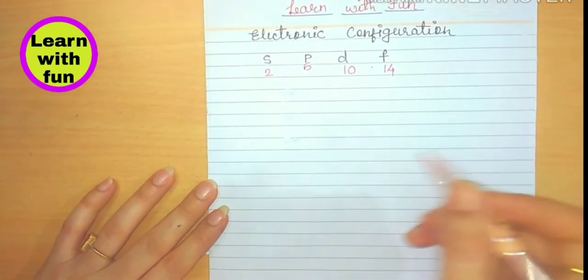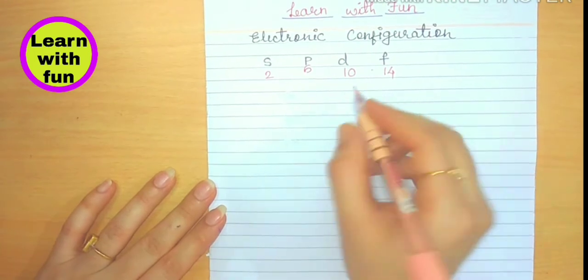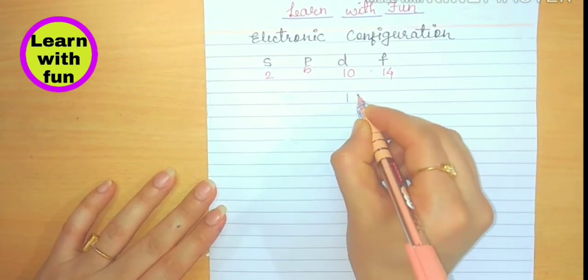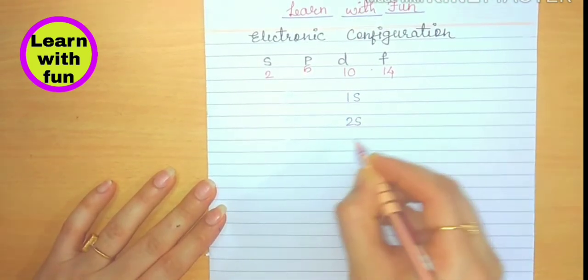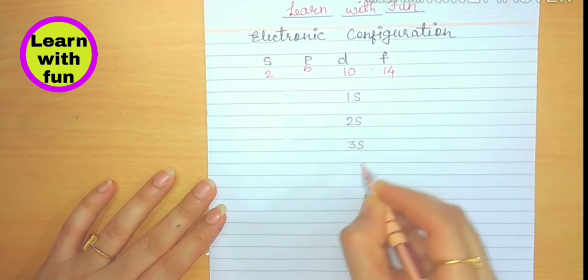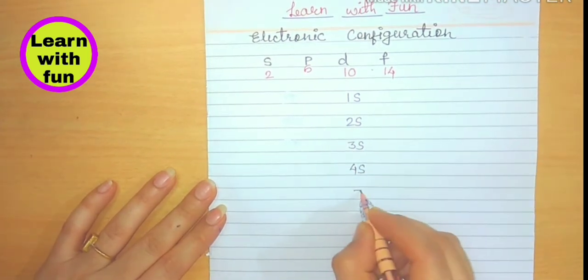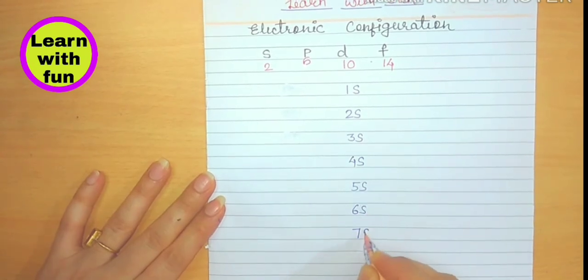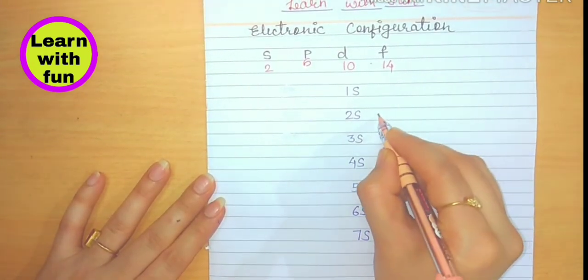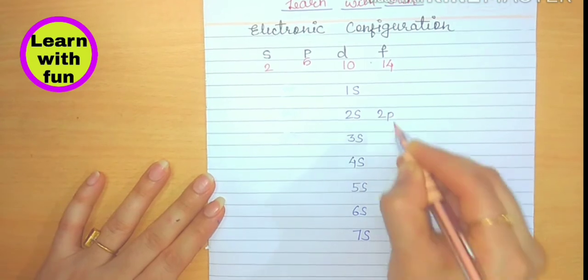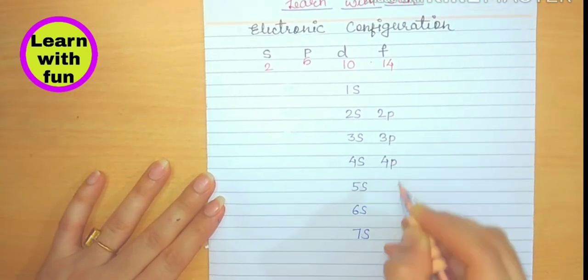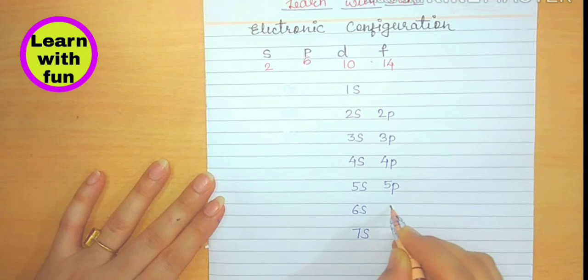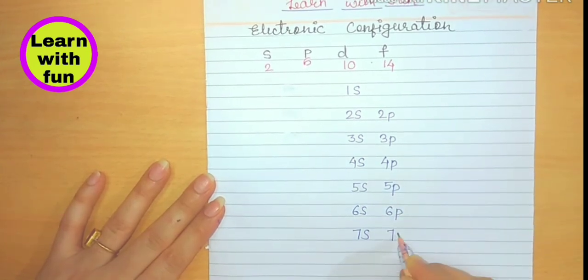So this is the way. Let's write the method: 1S, 2S, 3S, 4S, 5S, 6S, 7S. Now start from here: 2P, 3P, 4P, 5P, 6P, 7P.